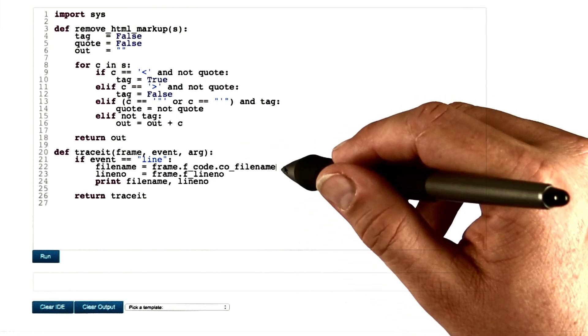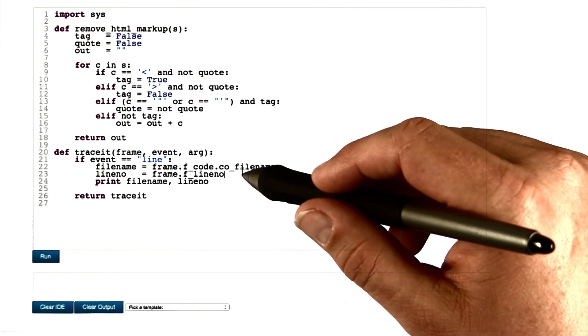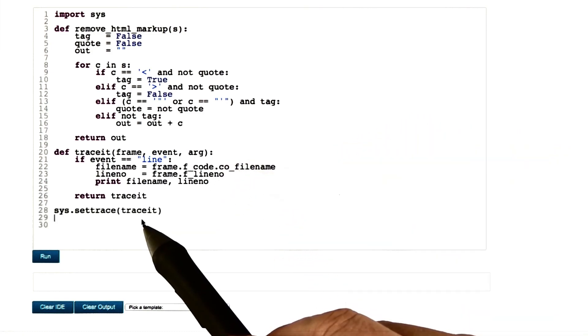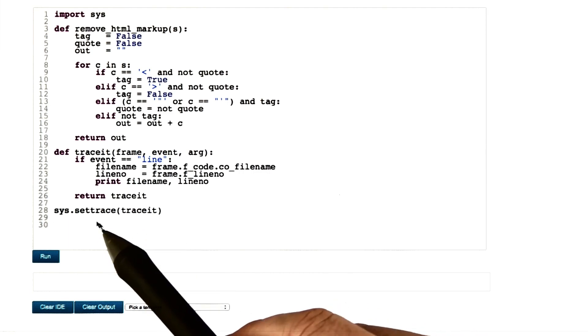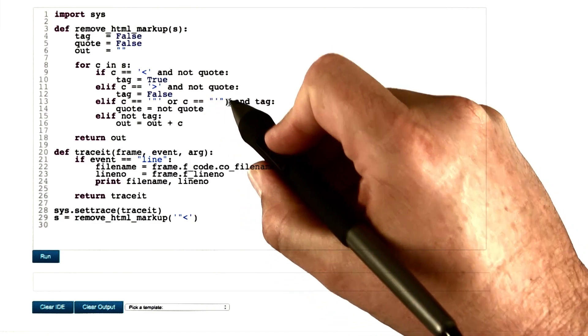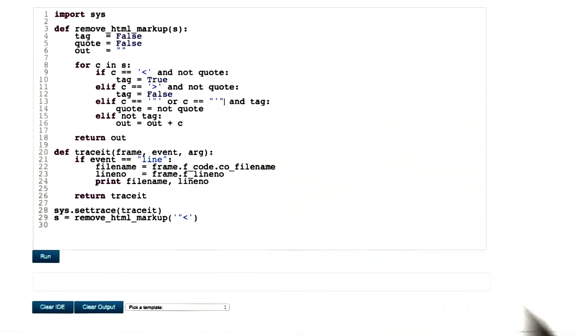which accesses the file name of the code as well as the current line numbers that's executed and we print this out on standard output. We record this as a tracing function. Let's use the buggy version of the remove HTML markup function here in order to have some more fun.